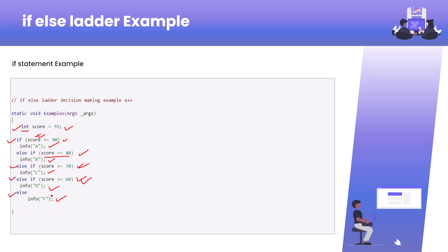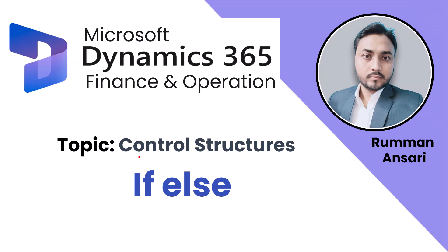If your scoring system goes below 30 or 50, you can add more else-if conditions as per your requirement, and at the last you give the default else statement so if no condition matches it will fall there. I hope you understood the concept of control structures and how to use if and else statements in your code. If you have any questions or confusion, write in the comment section — we'll try to give you a solution as soon as possible. Thanks for watching, see you in the next video, take care, bye-bye.